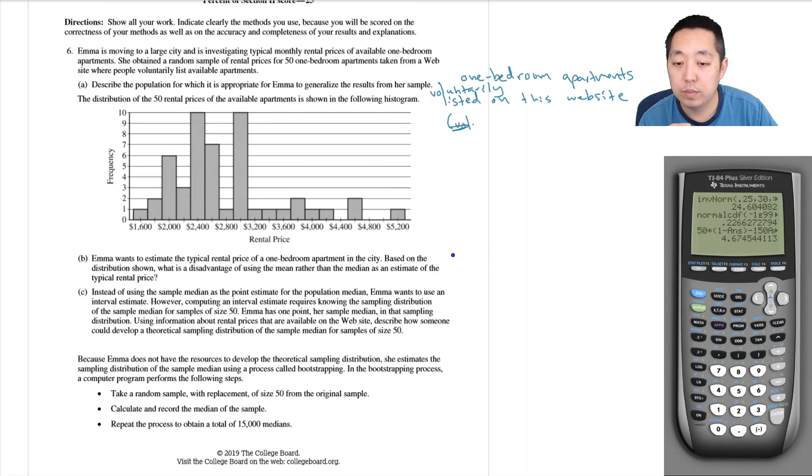Because it is right skewed with outliers, the mean will be inflated more. These values up here are going to drive the mean much higher on average, and that's going to give an unreasonable expectation of what she should expect to pay.